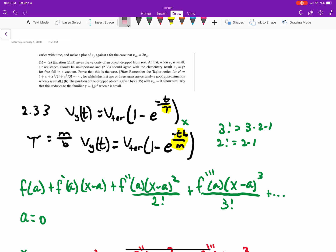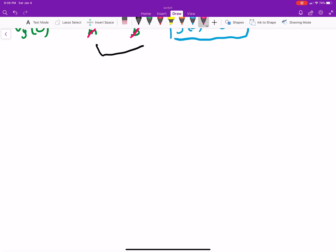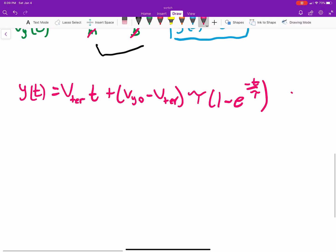And then it says for equation 2.35, basically do the same thing. All right, well what is equation 2.35? We worked through this one too. y as a function of time is v terminal times t plus v y naught minus v terminal times tau times 1 minus e to the minus t over tau. Hopefully you guys remember this equation. We did work through it. This is the 2.35, that's what the question is referencing there.